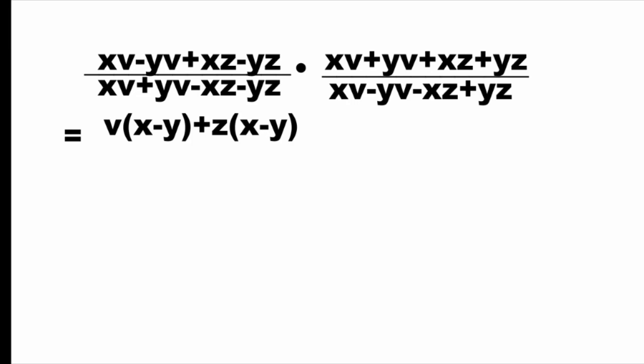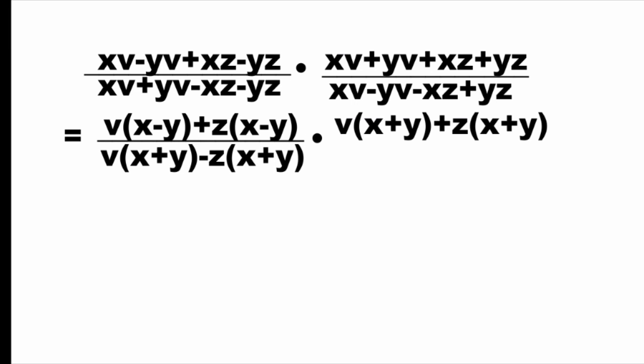over v times x plus y plus z times x plus y and the second numerator as v times x plus y plus z times x plus y over v times x minus y minus z times x minus y.